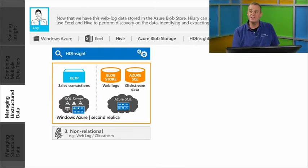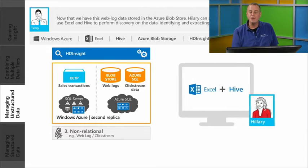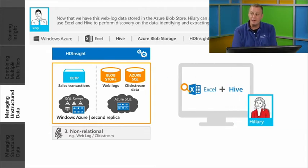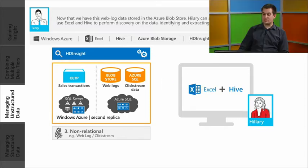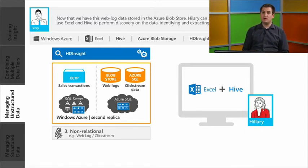We're going to process that data right out of Azure Storage using HD Insight to do a MapReduce job, reduce it down to just the data we're interested in, and then use some visualization tools. Microsoft has the capability to query information either from the Azure Storage Blob using features inside Excel or Power BI, such as Power Query, and we can query the processed data straight out of our Azure Storage Blob.